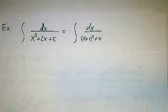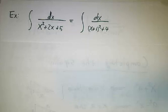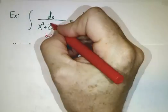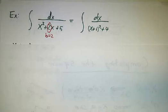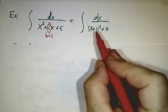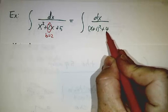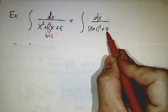In our first example, we want to do the integral of dx over x squared plus 2x plus 5. And here, b is 2, that's our b. So we always want x plus b over 2, so that's x plus 1 squared. And what's left over is 4. Once you take away x plus 1 squared, you've got 4.